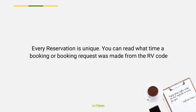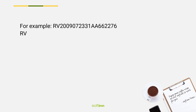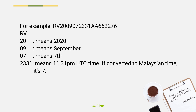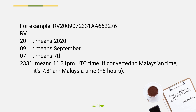Every reservation is unique. You can read what time a booking request was made from the RV code. For example: RV20090772331AA66227 6. Here, '20' means 2020, '09' means September, '07' means the 7th, and '2331' means 11:31 PM.